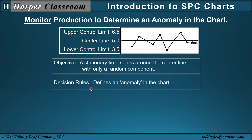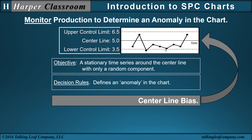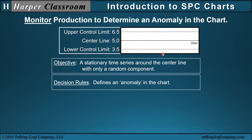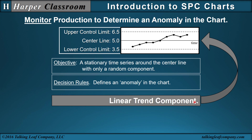To determine anomaly, we use decision rules. A decision rule defines an anomaly in the chart, and there could be many decision rules. For example, if there are too many points either below or above the center line, that constitutes a center line bias, which is an anomaly. Or, if we have a continuously increasing or decreasing set of values, that would be a linear trend component — again, an anomaly.